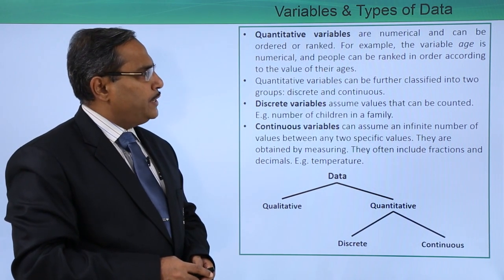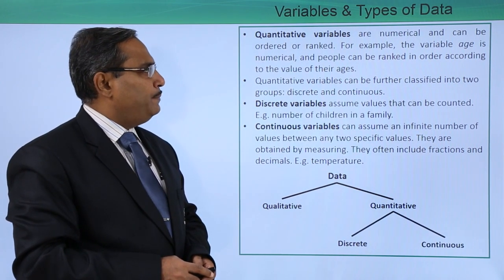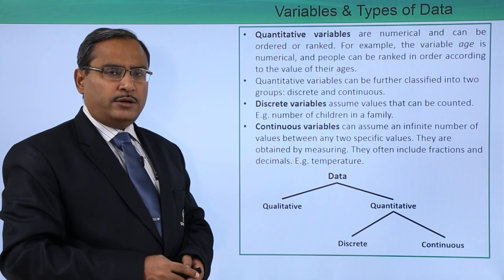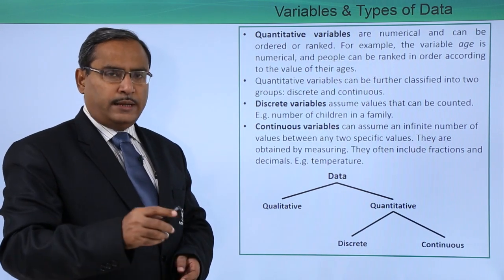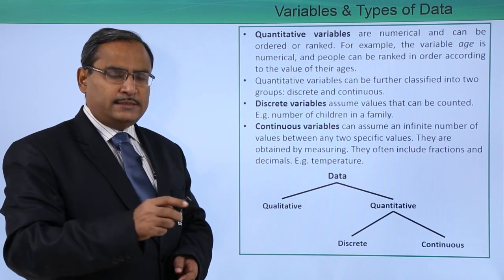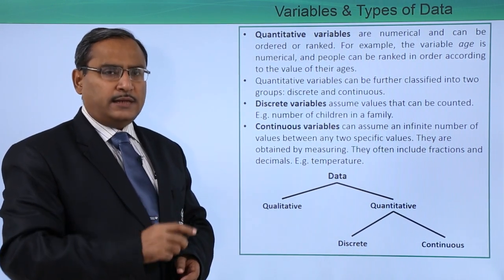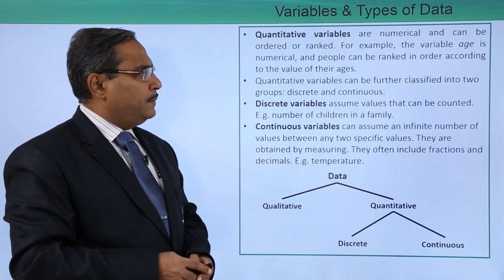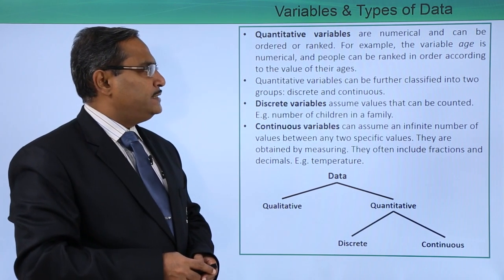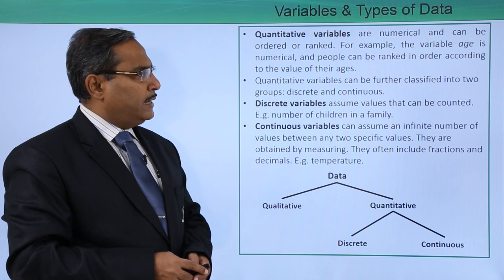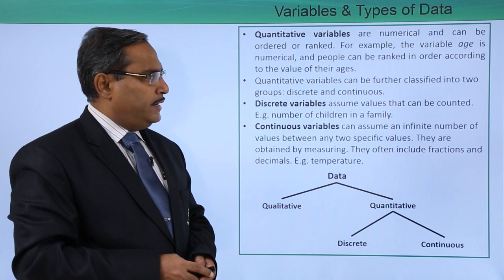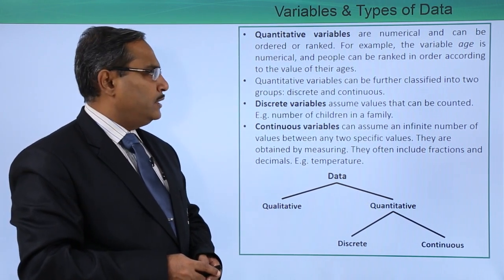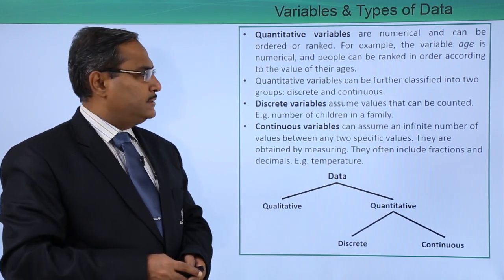Quantitative variables are numerical and can be ordered or ranked. Ordered means you can arrange them in a certain sequence. For example, the variable age is numerical and people can be ranked in order according to the value of their ages.